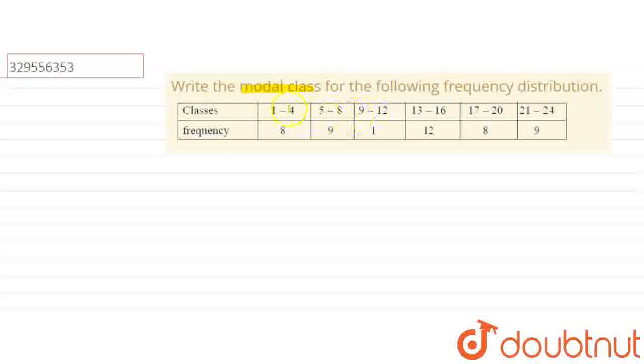Here we have a distribution: 1 to 4, 5 to 8, 9 to 12, 13 to 16, 17 to 20. This modal class is given and this frequency is given.